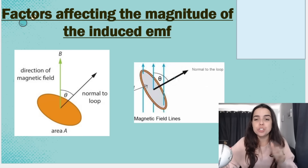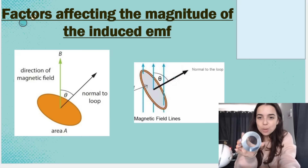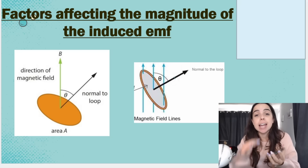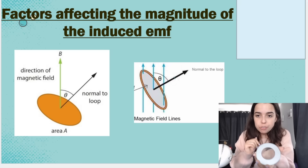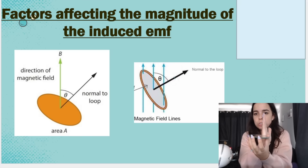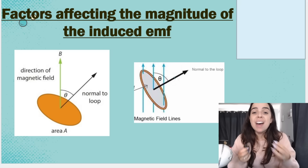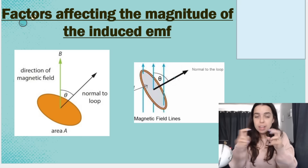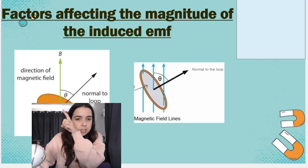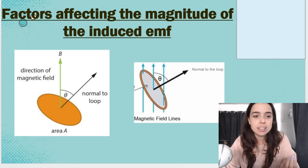So what is the normal to the loop? If you have a loop — pretend this is my loop — the normal is an imaginary invisible line that is at 90 degrees relative to the surface of the loop. If the loop is lying flat, the normal would be an invisible line coming up 90 degrees from the surface. If I rotate the loop, the normal rotates with it. The angle in the formula is the angle between this normal and the magnetic field line. In the diagram, the black line drawn in is the normal and the green line is the magnetic field line — the angle between those is theta.